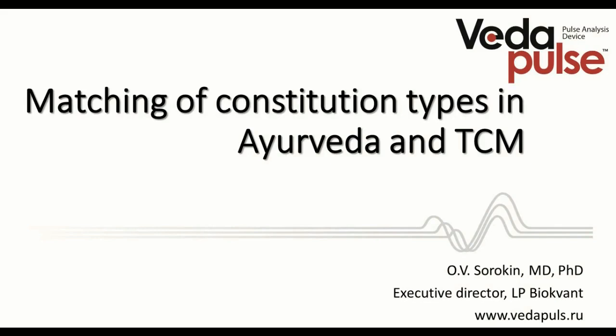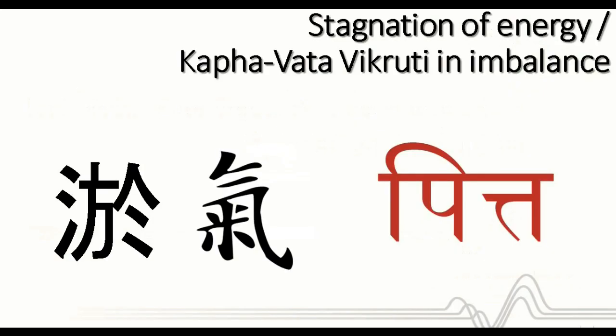Hello, dear participants. As an interpreter, I am speaking on behalf of Dr. Alek Sorokin, Ph.D. and Executive Director of the National Ayurvedic Medical Association of Russia. I welcome you to another lecture dedicated to the issues of matching of constitution types in traditional Chinese medicine and Ayurveda. Today's lecture is about the energy stagnation syndrome, which is a serious problem because one of the most dangerous diseases — cancer — is standing behind it. This is the seventh lecture of the course and we are going to compare Ayurvedic and traditional Chinese medicine approaches for treatment of imbalanced Kapha-Vata Vikriti or energy stagnation syndrome.